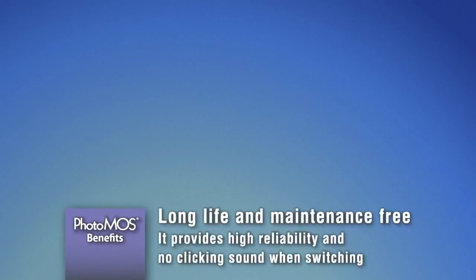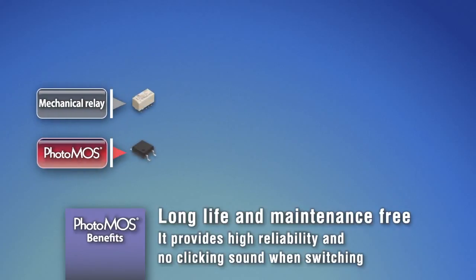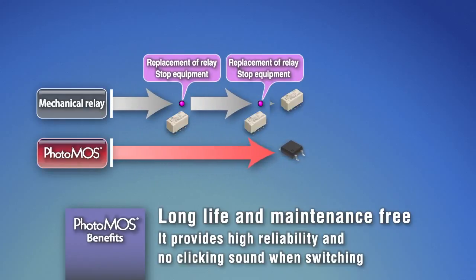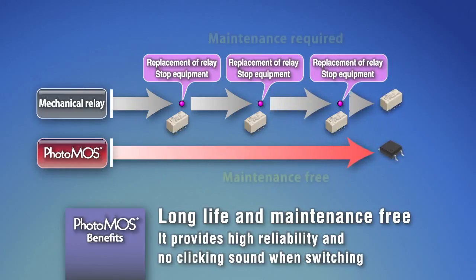Using MOSFET on the output side is a key feature of PhotoMOS. Compared with mechanical relays, it brings big benefits such as maintenance-free operation and long life. It can reduce the total costs caused by relay replacement, including costs related to stopping the equipment. In addition, it provides high reliability and no clicking sound when switching.